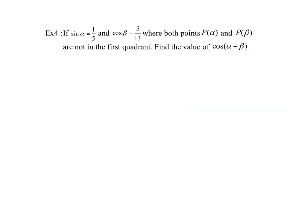This is a harder question. We're given that sin α = 1/5, with the point alpha not in the first quadrant, so since sine is positive we must be in the second quadrant. Drawing a triangle with opposite = 1 and hypotenuse = 5, we apply the Pythagorean theorem: 5² minus 1² equals x², so 25 minus 1 = 24, giving x = ±√24.